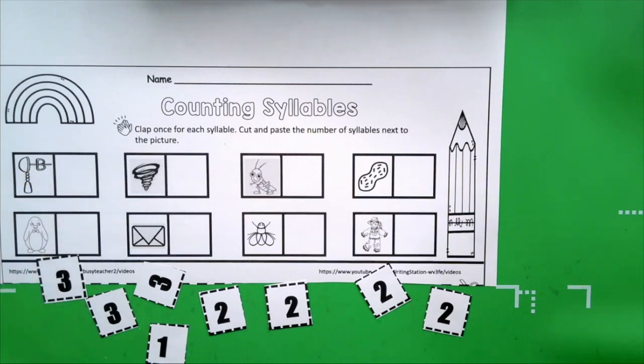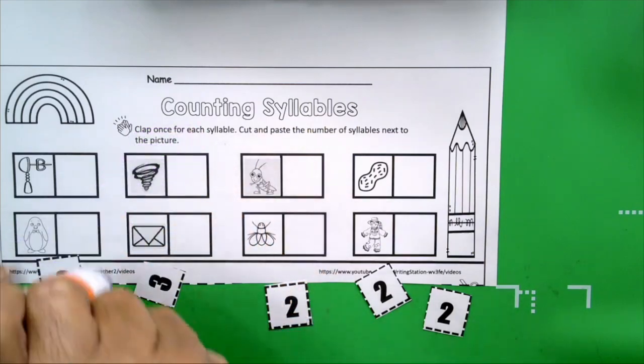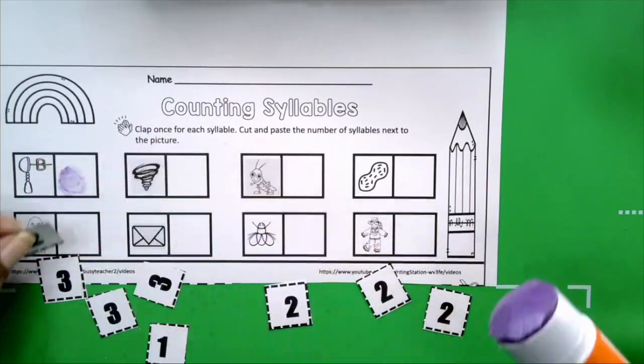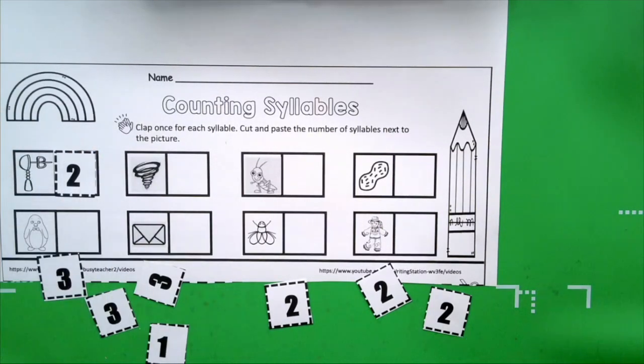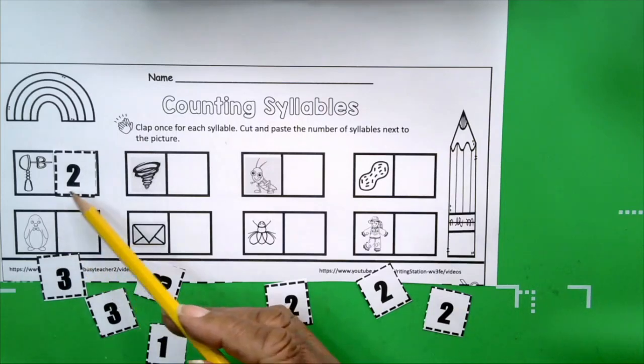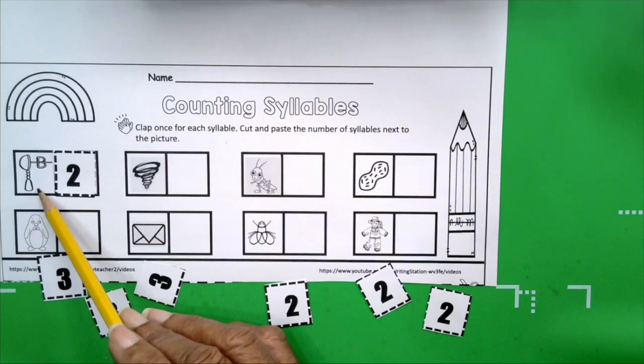For instance, ear ring. Get your hands together ready, boys and girls, and listen. Ear ring. How many claps did you hear? Two. And how many syllables are in ear ring? Two. So we're going to take the number two. Can you find number two? Here it is. You're going to need your glue stick. We're going to glue the number two next to earring.